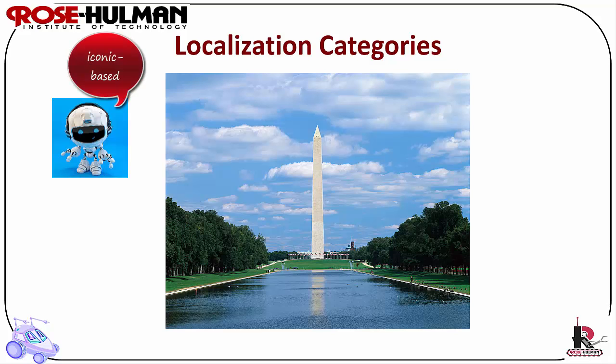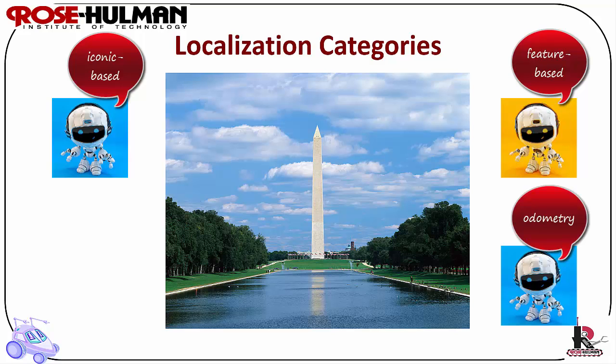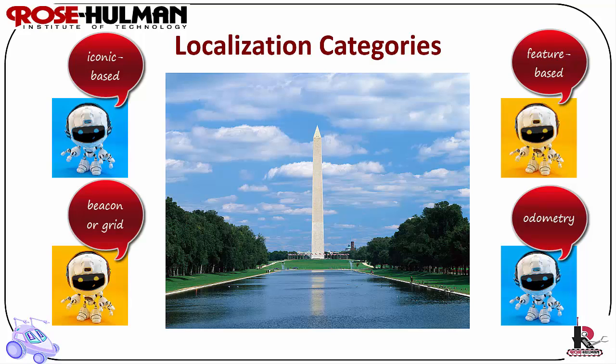Localization categories: you have iconic-based, which is used in an occupancy grid — a certainty or evidence grid which fuses sensor data into a world model or map. Fusion is done by an algorithm provided by a formal theory of evidence, such as Bayesian, Dempster-Shafer, or HIMM. Hybrid architectures use the occupancy grid as a virtual sensor suited for metric map building. Another category is feature-based, which is suited for topological map building and is based upon the Markov decision process. You can also use odometry or external sensors such as beacons or landmarks.